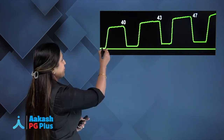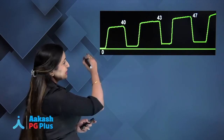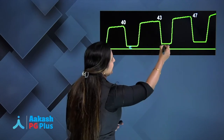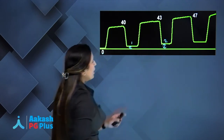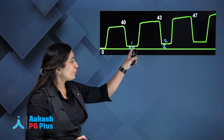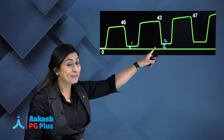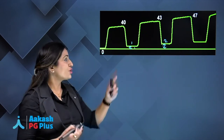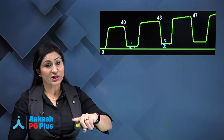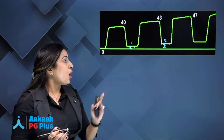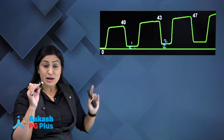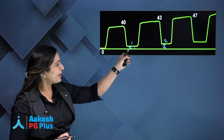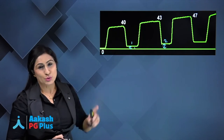When you see a capnogram where the baseline CO2, which should be zero, is gradually increasing with each ventilation — maybe rising to 1 or 2 — this shows that the patient is breathing in carbon dioxide during inspiration, which should not happen. This indicates that the soda lime has been exhausted or there is a fault with the valve, and you need to change your soda lime.